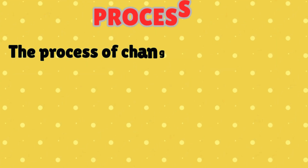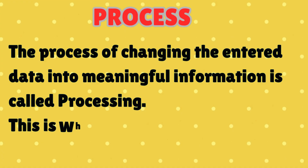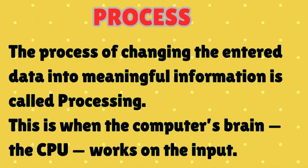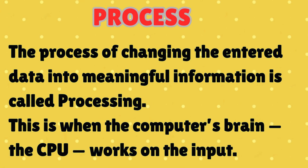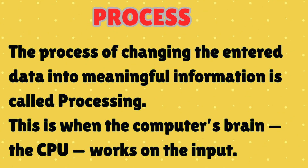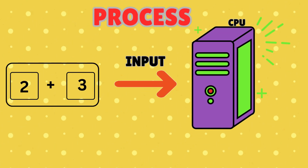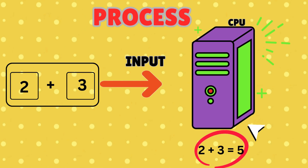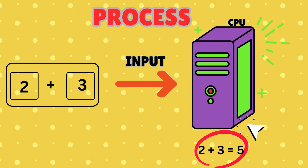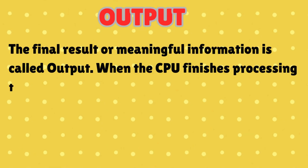The process of changing the entered data into meaningful information is called processing. This is when the computer's brain, the CPU, works on the input. For example, when you ask the computer to solve 2 plus 3, the CPU processes it and gets the answer 5.